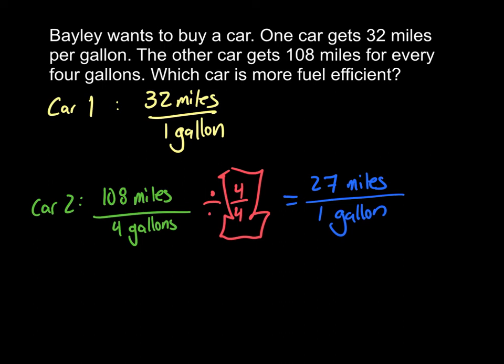And I can do that saying that I want 1 gallon as my denominator, and to get from 4 to 1 I need to divide by 4. And using that giant one again, so 108 divided by 4 gives me 27 miles to the gallon. So then I know car 1 is more fuel efficient.